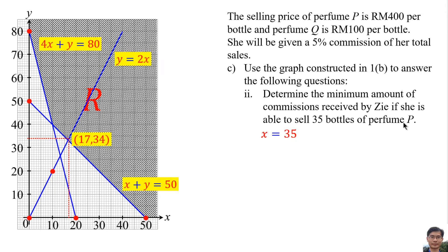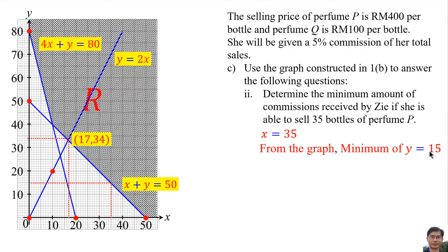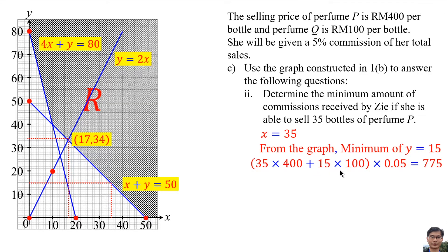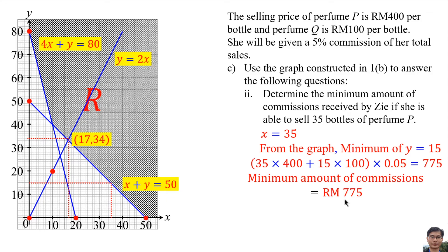35 bottles of perfume P means X is 35, so we draw this line on the graph. When the line reaches the first point on the shaded region, we can find the minimum value of Y, which is 15. So the minimum of Y is 15. The price of perfume P is RM400 and we have 35 bottles, and the price of perfume Q is RM100 with 15 bottles. The commission given is 5%, so we multiply by 0.05. The total commission is RM775, so the minimum amount of commission is RM775.